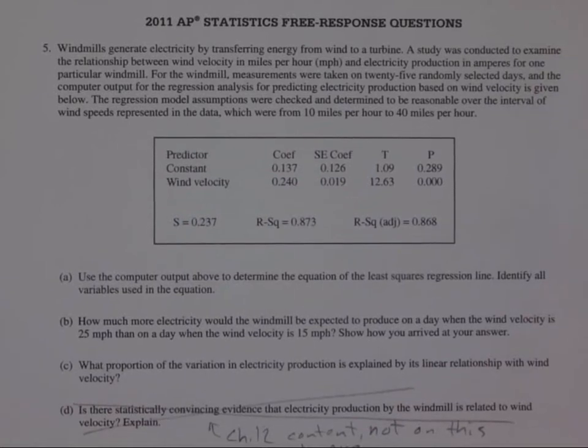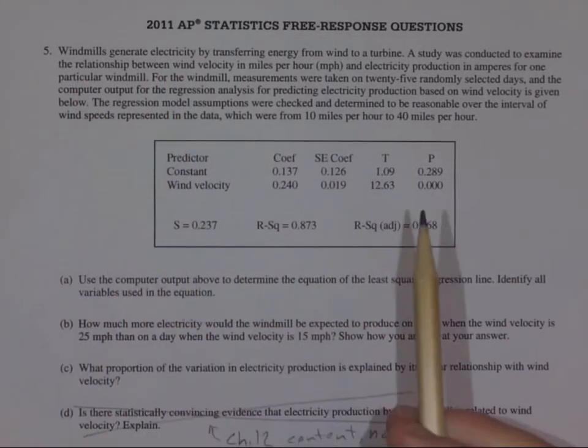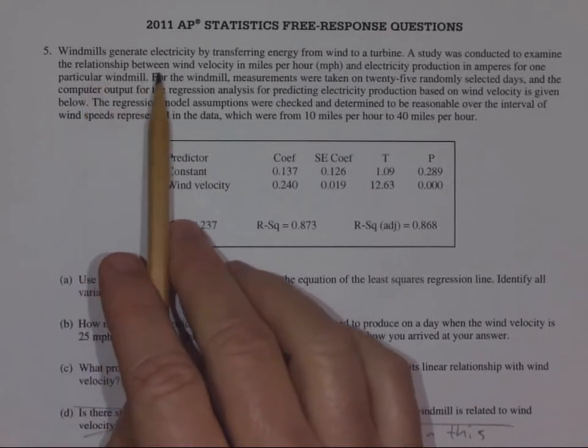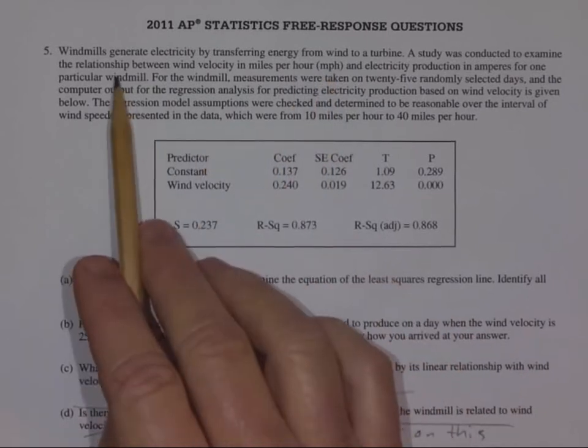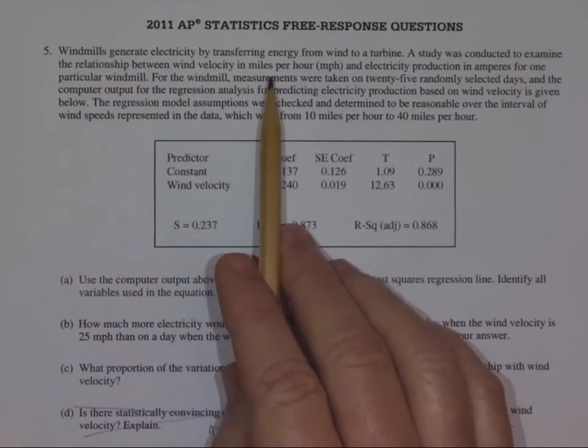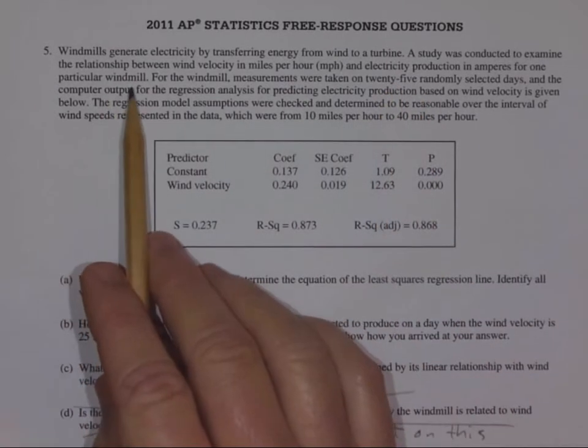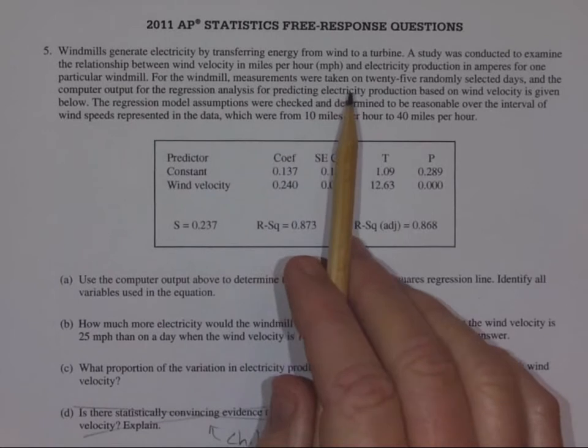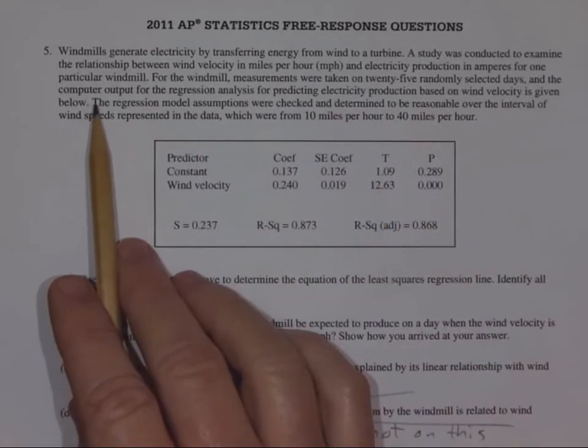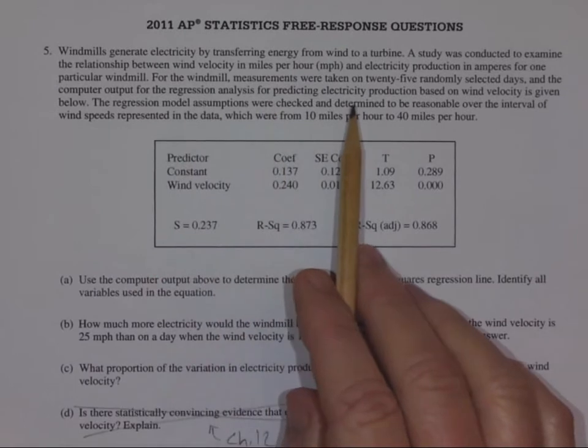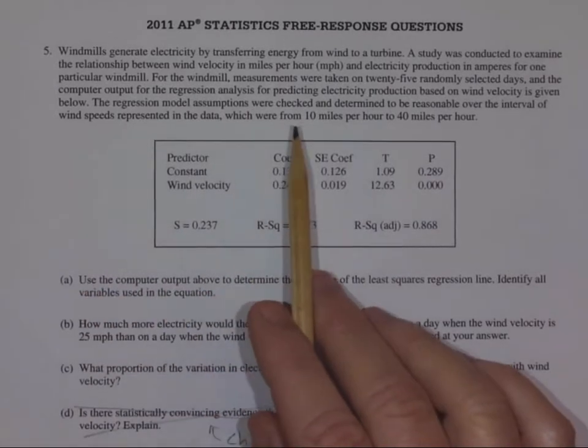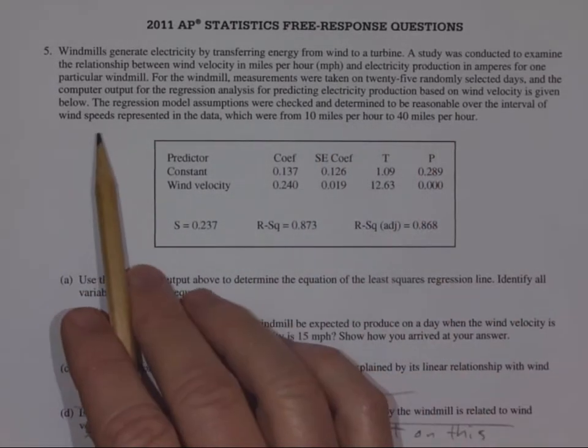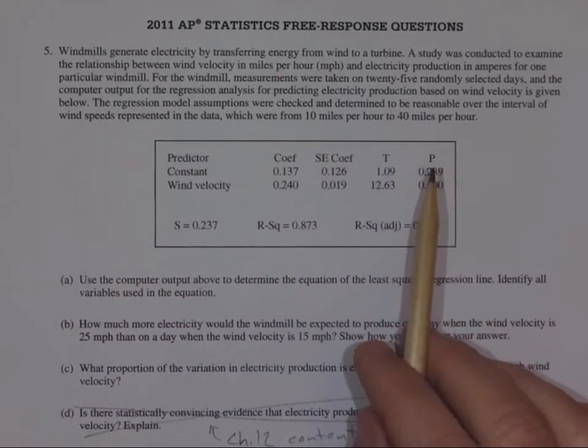Hello, welcome to the free response problem of the day. Let's see if we can figure this one out. This is 2011 number 5. It says windmills generate electricity by transferring energy from wind to a turbine. A study was conducted to examine the relationship between wind velocity in miles per hour and electricity production in amperes for one particular windmill. Measurements were taken on 25 randomly selected days and the computer output for the regression analysis for predicting electricity production based on wind velocity is given below. The regression model assumptions were checked and determined to be reasonable over the interval of wind speeds presented in the data, which were from 10 to 40 miles per hour.